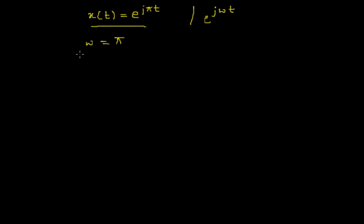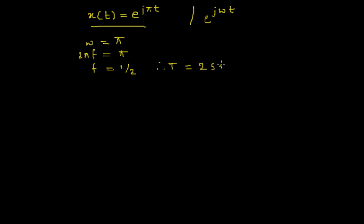Since ω equals π, and we know that ω equals 2πf, we can write 2πf equals π, giving us f equals 1/2. This is the frequency. From this, we can get the fundamental period T equals 2 seconds.